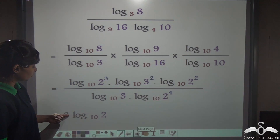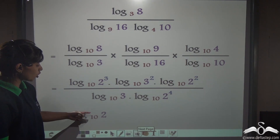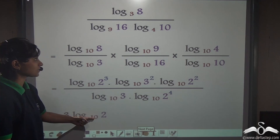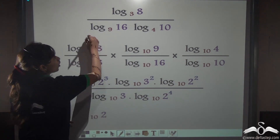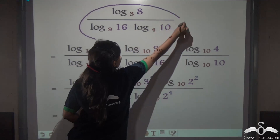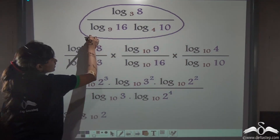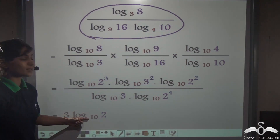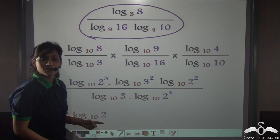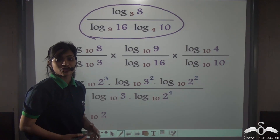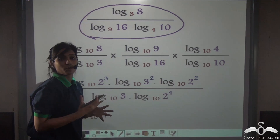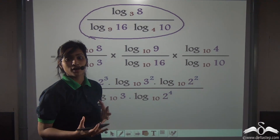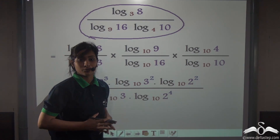So what is left is 3 log 2 to the base 10. You can see how we simplified this big sum into just one term by using the base changing formula. This is how the base changing formula will help you.